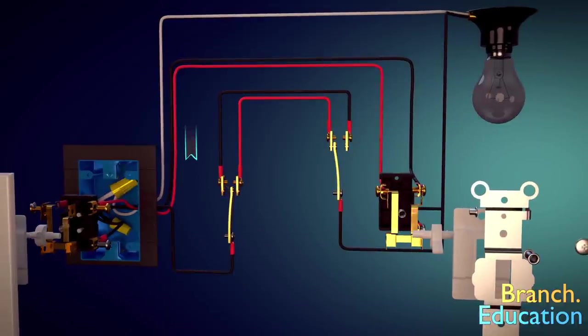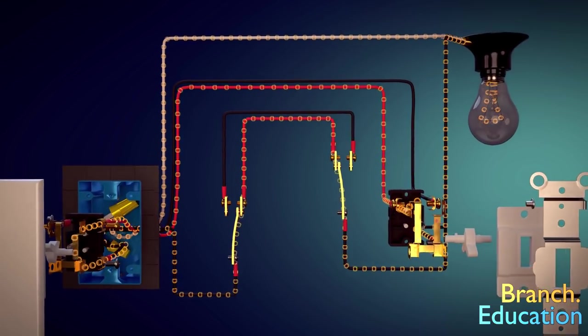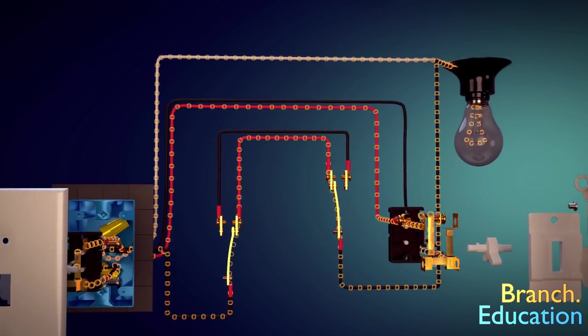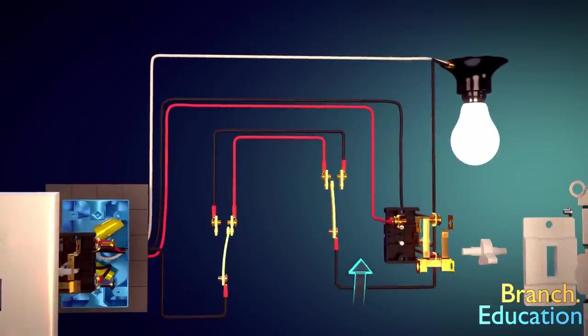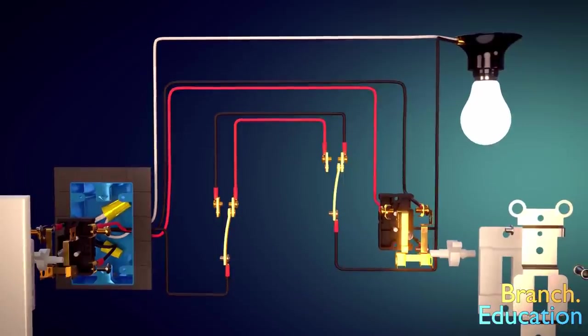When we flip the toggle of one of the three-way switches, a path for the electricity to flow to the stairway light is created and the light turns on. However, when we flip the other three-way switches toggle, the path is broken and the light turns off.